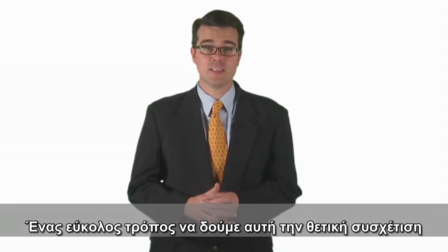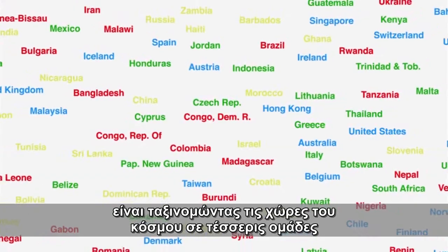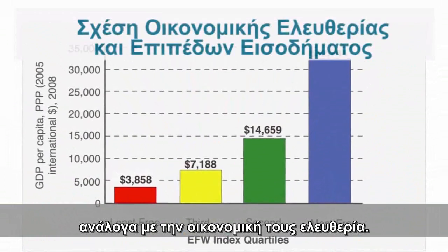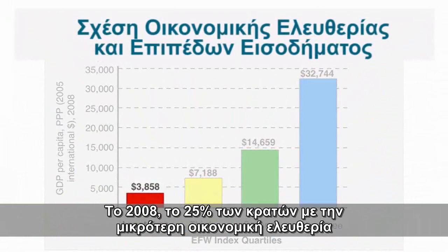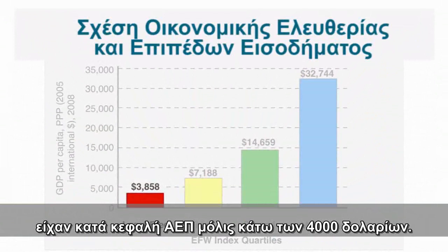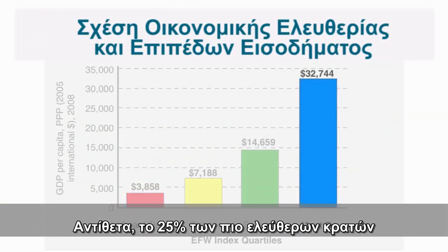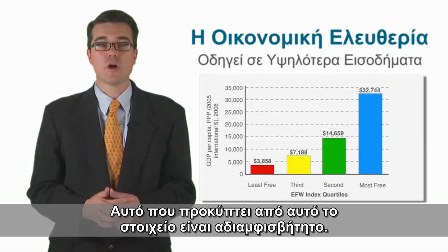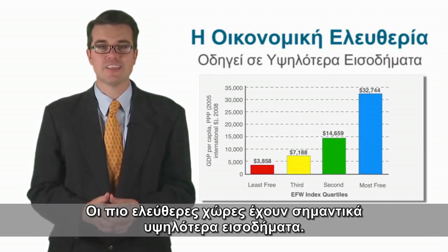An easy way to see this positive relationship is by breaking up the countries of the world into four groups based on their economic freedom. In 2008, the 25% of countries with the least economic freedom had GDP per capita of just under $4,000. In contrast, the freest 25% of countries had GDP levels over $30,000 per person. What emerges from this figure is unmistakable: freer countries have substantially higher incomes.